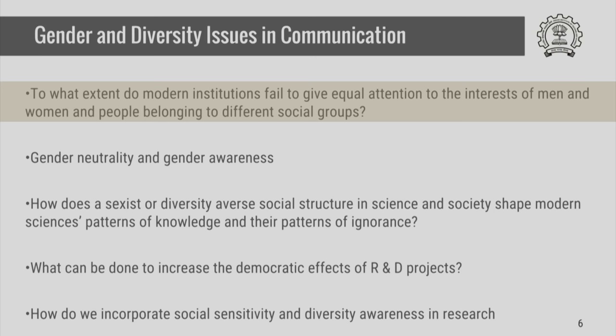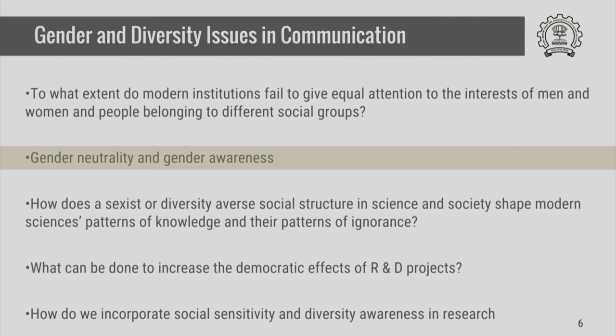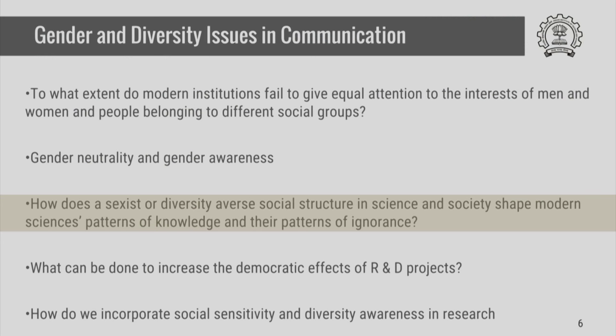We know that all modern institutions are not equal in giving attention to the interests of men and women and of people belonging to different groups. It is therefore up to us as professional academics to ensure that we are as far as possible aware of these inequalities and, where needed, we are neutral in terms of these differences, so that we do not bring in these inequalities into our own research processes and communication. The kind of questions that are asked could be about how a society that is averse to diversity, or a society that is sexist, structures science and society, and how they shape modern science's patterns of knowledge and patterns of ignorance.